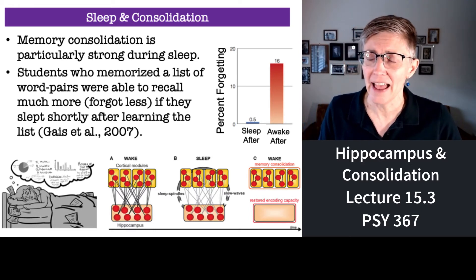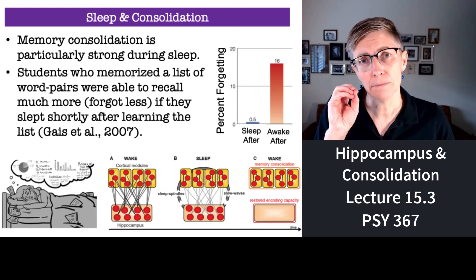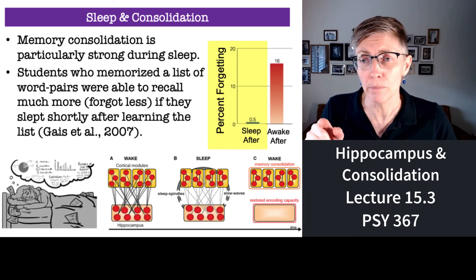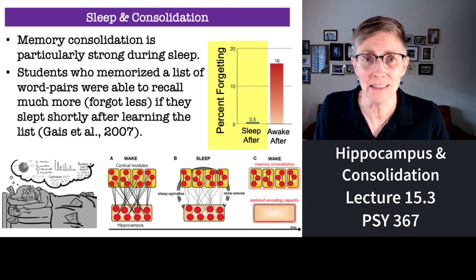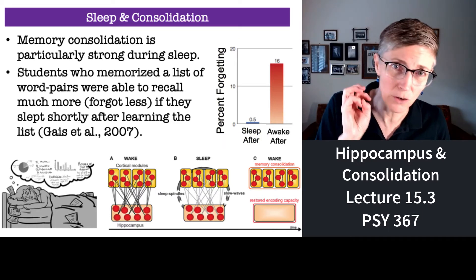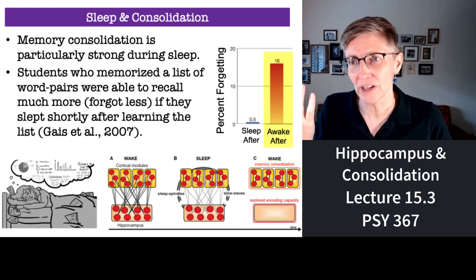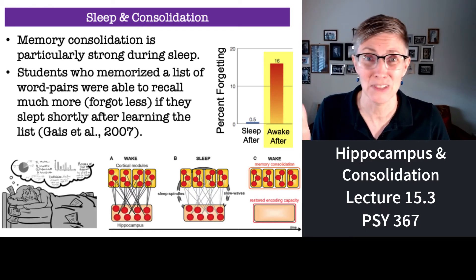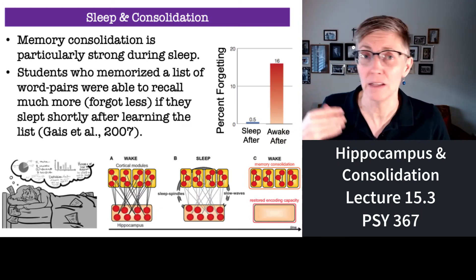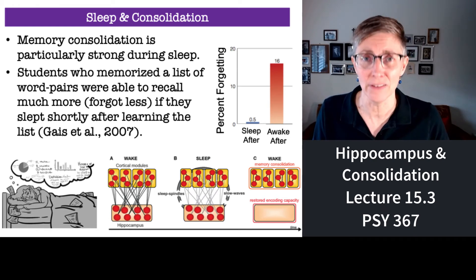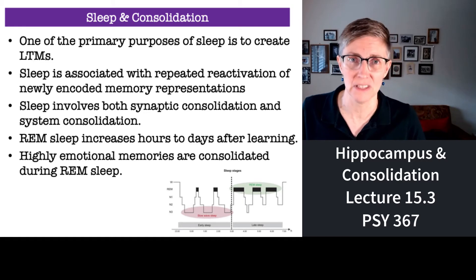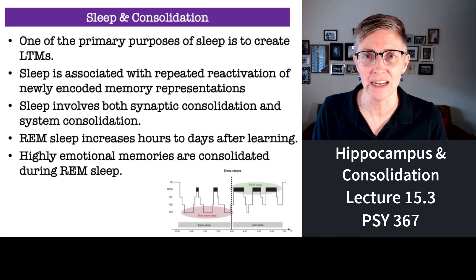If you memorized a list of word pairs and slept afterward, you didn't forget much of anything. But if you spent the same amount of time learning the same list and stayed awake, you forgot a lot more — 16 times more. Consolidation happens when you sleep. If you don't sleep, what you've studied won't be consolidated. Some people argue that the whole point of sleep is to allow for consolidation of long-term memories.